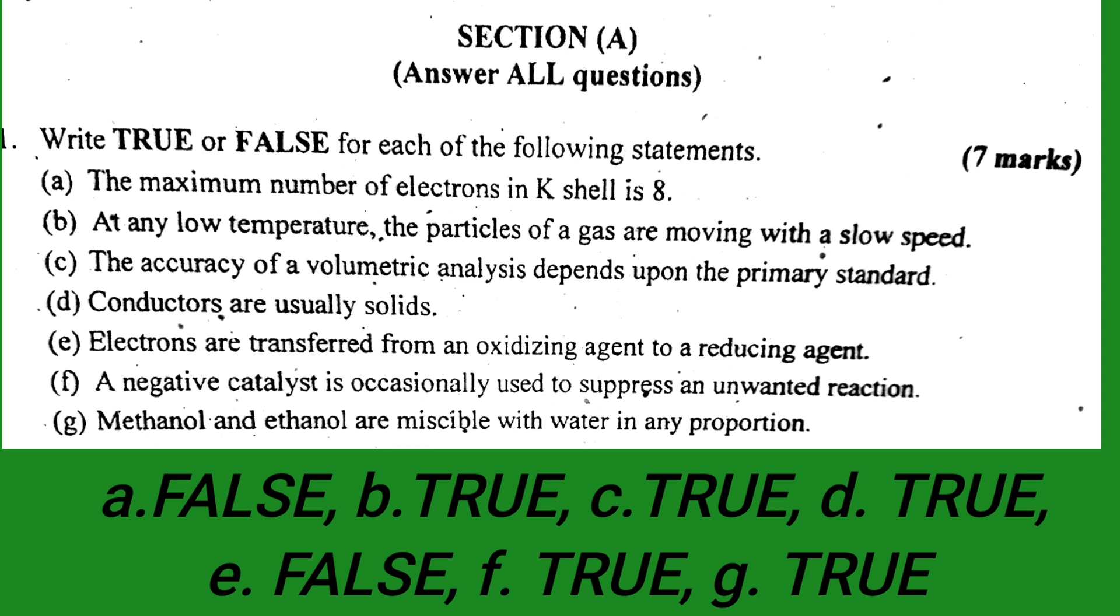Number B: at any low temperature, the particles of a gas are moving with a slow speed. At low temperature, the particles of gas move slowly, so this is true. Number C: the accuracy of a volumetric analysis depends upon the primary standard. This is true - the accuracy depends on the primary standard compound.